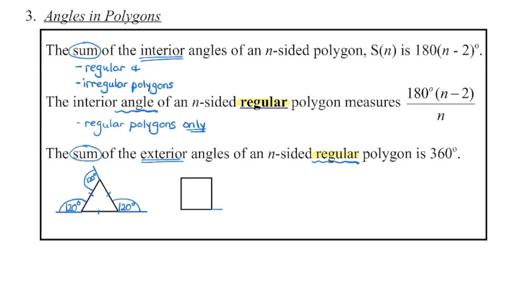The same thing happens with a square. Each interior angle is 90 degrees, so each exterior angle is also 90 degrees — together they form a straight angle. This occurs at each of the four corners, so 90 degrees times four gives a total of 360 degrees. This holds true for any regular polygon.